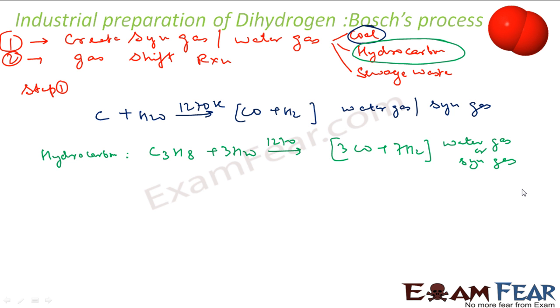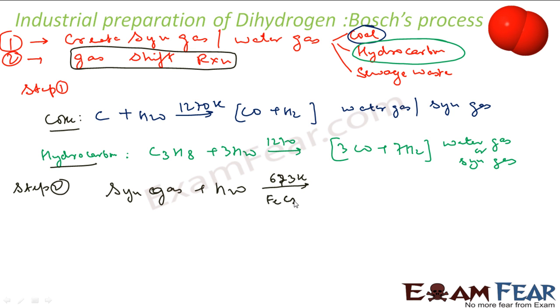So once I have my water or syngas, I'll use the second reaction, a gas shift reaction. This is my step 2. Step 1 I had two options: one was from coke and the other is from hydrocarbon. Now I have step 2. In step 2, from syngas or water gas, the reaction is like this: we put some water in this and we again heat it, but lesser temperature, 673 Kelvin, and we use iron chromate FeCrO4. With this, what you get is you get more hydrogen gas here plus carbon dioxide.